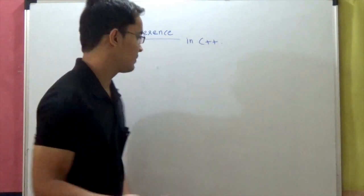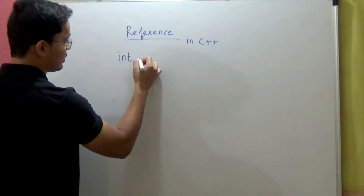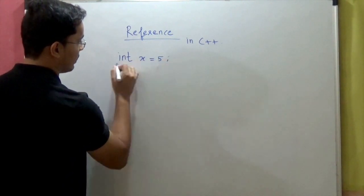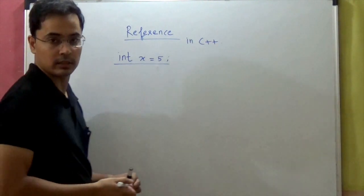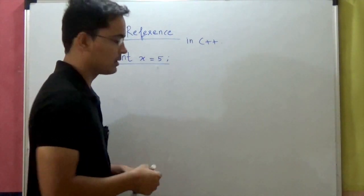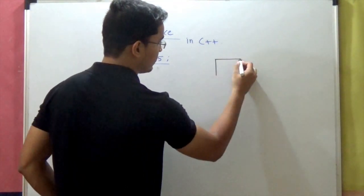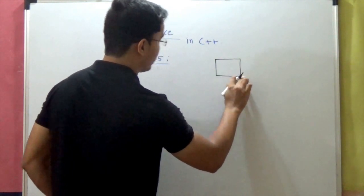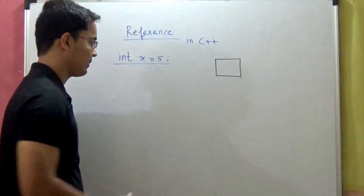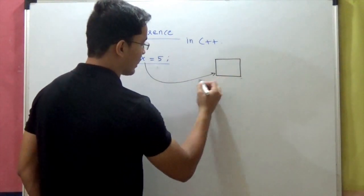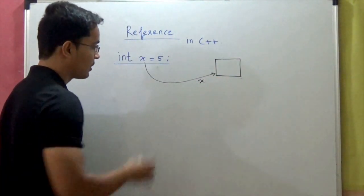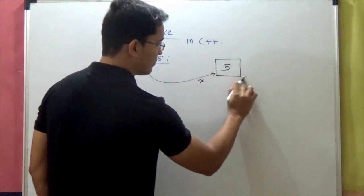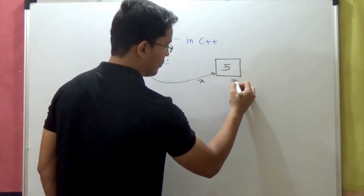So what is an alias? Let's say I write: integer x equal to 5. When you make such a declaration, a random memory location is selected. Most probably this is a local variable, so it's on the stack. This memory location can be accessed by the name x, the value will be stored as 5, and it will have some address, let's say 1000.